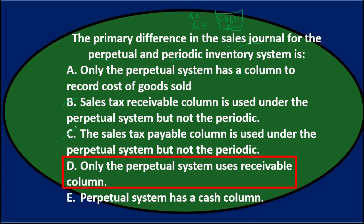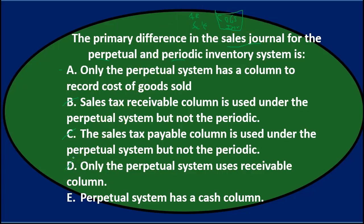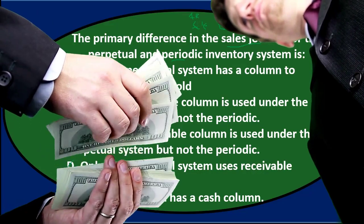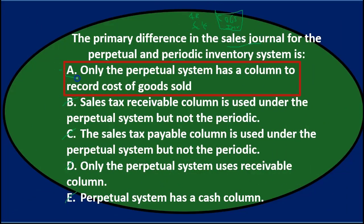D says only the perpetual system uses a receivable column — that's not true, because both systems debit accounts receivable and credit sales. E says the perpetual system has a cash column — the sales journal doesn't have a cash column regardless of the system; if cash is received, it goes in the Cash Receipts Journal. So A is the most proper answer: the primary difference in the sales journal for the perpetual and periodic inventory systems is that only the perpetual system has a column to record cost of goods sold.